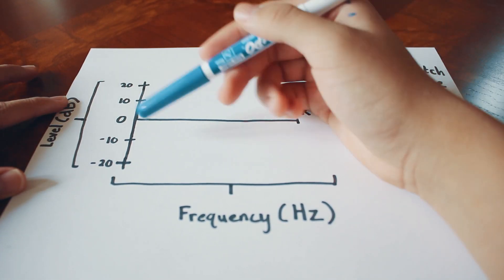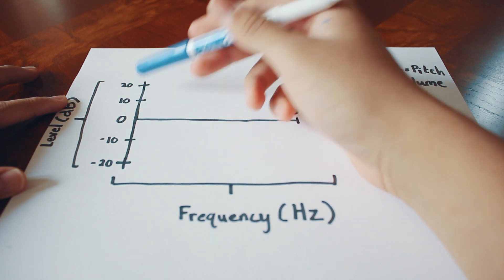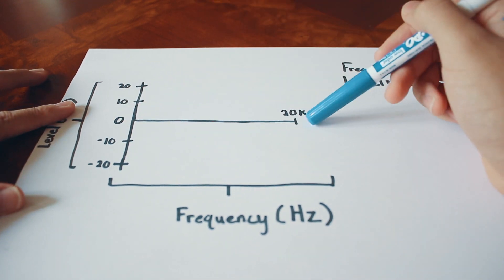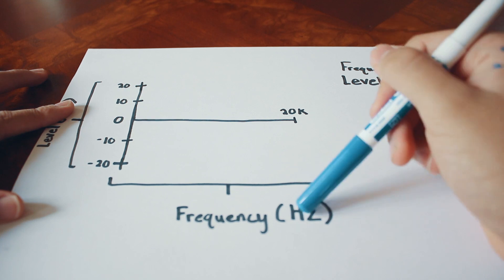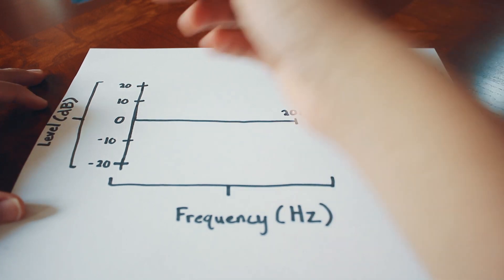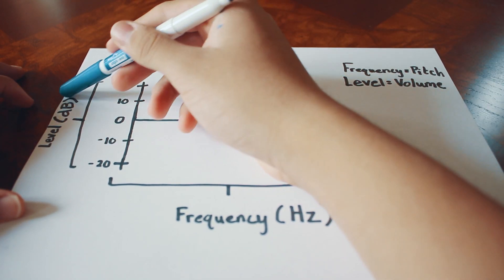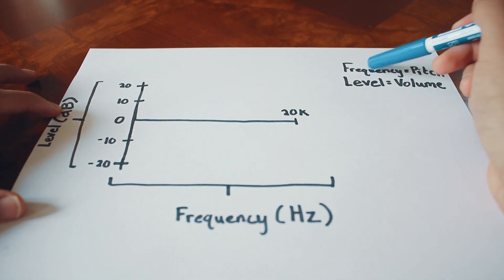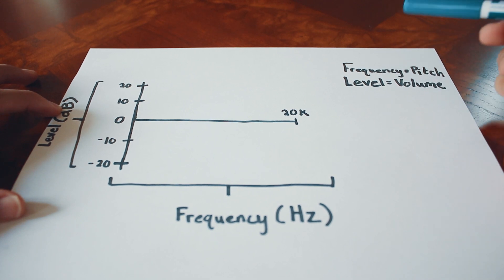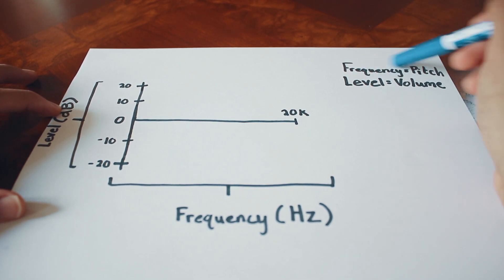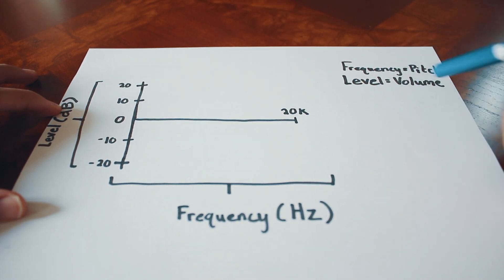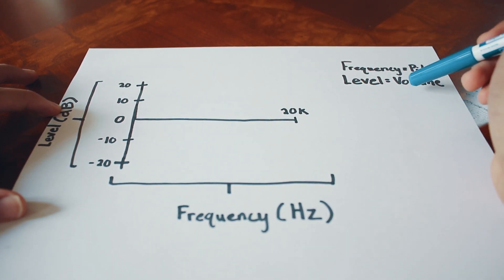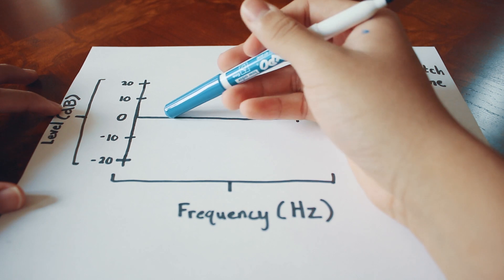As you can see here, we have a drawing of our EQ graph. We have the vertical line and the horizontal line. The horizontal line relates to frequency, which is measured in Hertz, and the vertical line relates to level, which is measured in decibels. When we're talking about frequency, we're talking about pitch — the pitch of our audio. When we're talking about level, we're talking about volume.